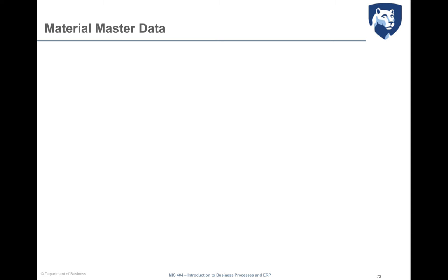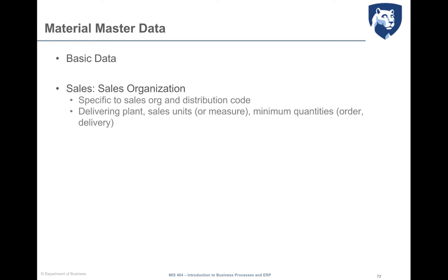For the fulfillment process, the three views that are relevant for managing these activities are basic data, sales organization data, and sales plant data. Basic data, which are relevant to all processes, are defined at the client level. Sales organization data are defined as a combination of sales organization and distribution channel.